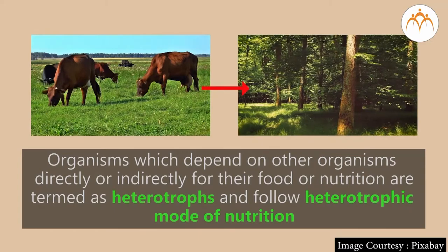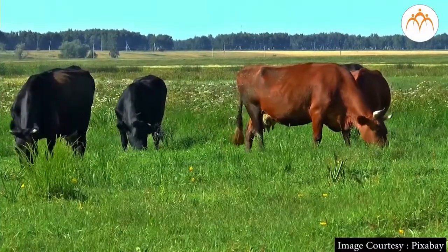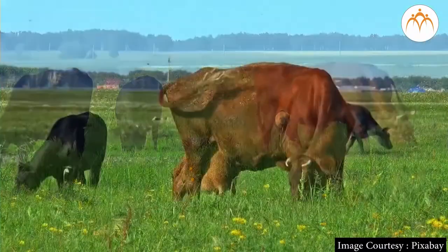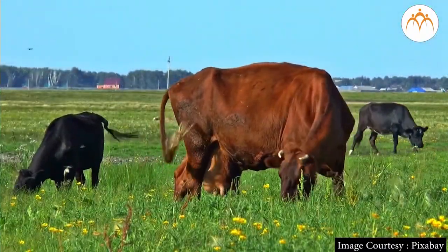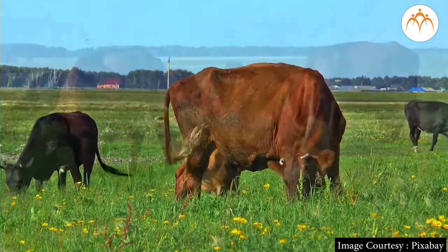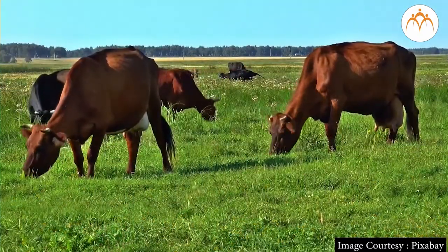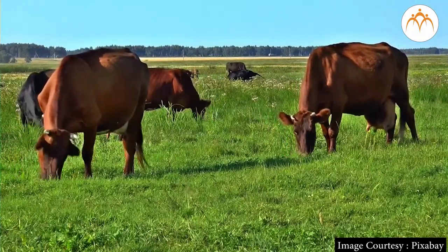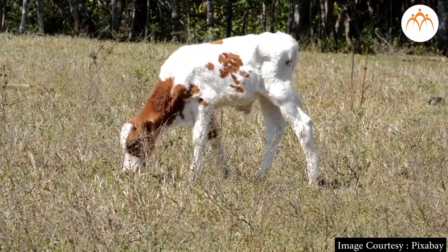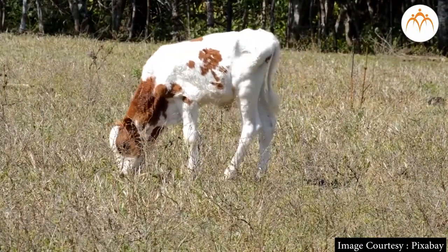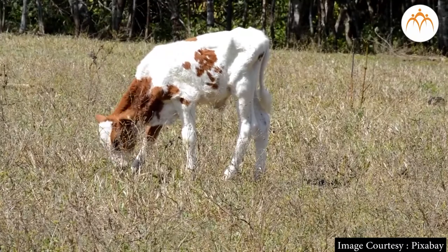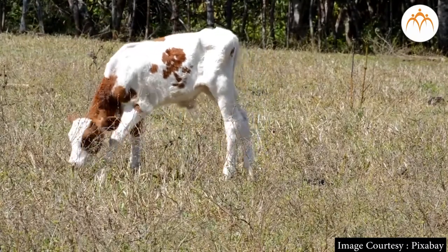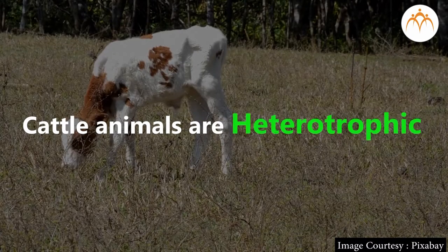Let us consider a few examples. Have you seen cows or buffalo grazing on farms, grasslands or fields? These animals eat grasses or leafy portions of herbaceous small plants. All plants are living organisms. As explained in the previous session, plants follow autotrophic mode of nutrition. The cattle animals that we just mentioned depend directly on these plants for nourishment as they eat or consume plants and parts of plants. Thus all cattle animals are heterotrophic.